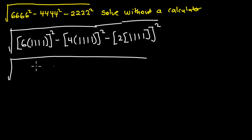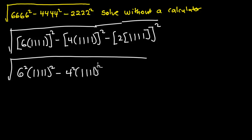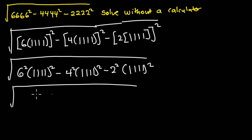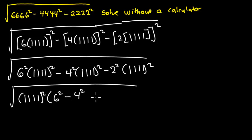So you are going to have 6 squared multiplying 1111 all squared, minus 4 squared multiplying 1111 squared, minus 2 squared multiplying 1111 squared. From here we have 1111 squared in common, so I'm going to factorize that out. We are going to have 1111 squared multiplying — here I'm going to be left with 6 squared minus 4 squared minus 2 squared.